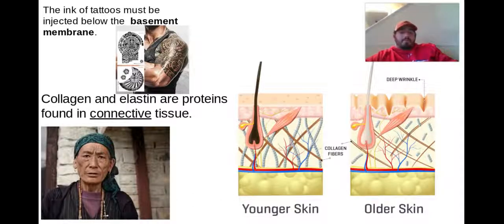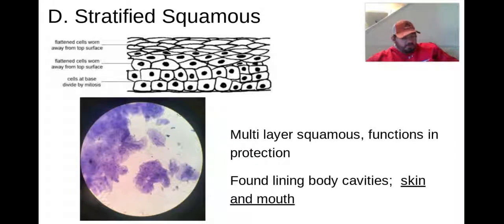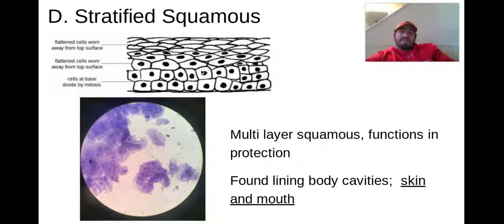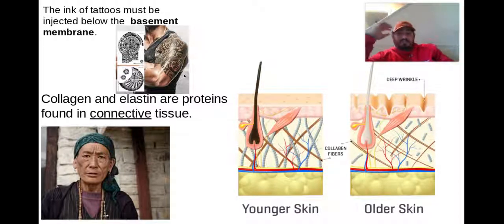Thinking about the basement membrane and going down to connective tissue — consider tattoos. If you put ink only in the upper layers, that tattoo wouldn't stick, because we said our cells are always reproducing and we're losing skin cells. To have a tattoo that lasts, we need to get down to that basement layer so all those new cells that keep coming up actually get that ink. That's also why tattoos fade over time — losing more and more ink as cells reproduce.